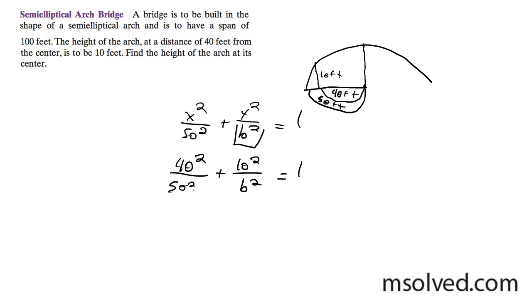Let's see here, this is equal to 0.64, so we get 100 over b squared is equal to 1 minus 0.64.